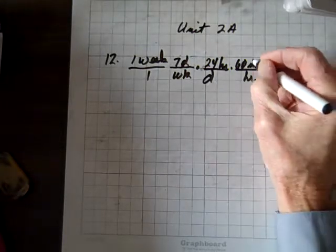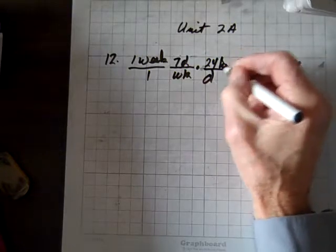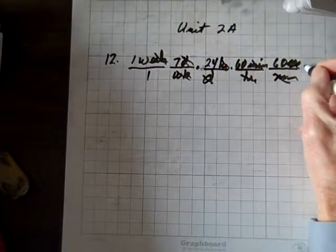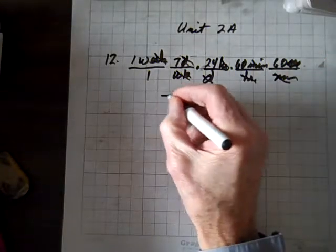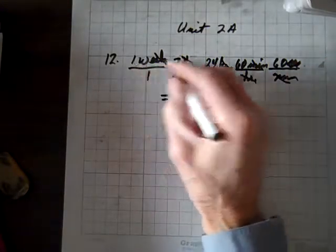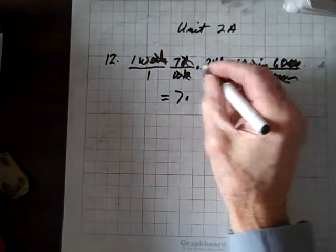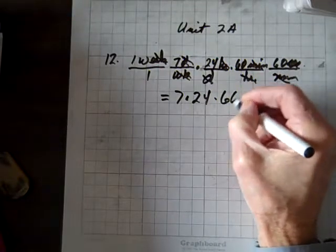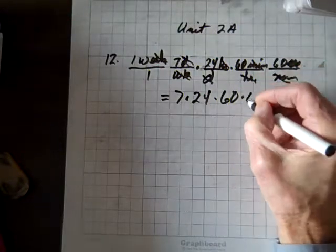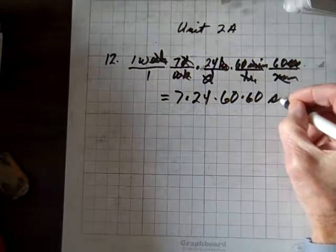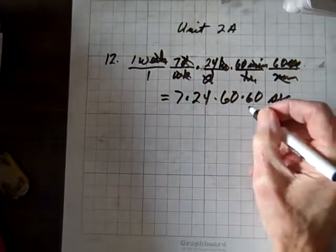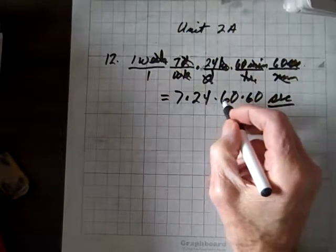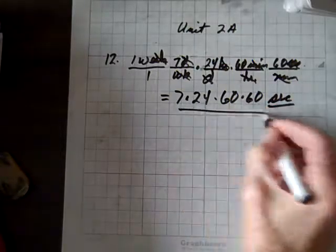Now let's see what divides out. The minutes divide out, the hours divide out, the days divide out, the weeks divide out. What we have, I'll put it down here, is 1 times 7 is 7, times 24, times 60, times 60, and that's going to be seconds. So they were right. You multiply 7 times 24 times 60 times 60, and we're done.